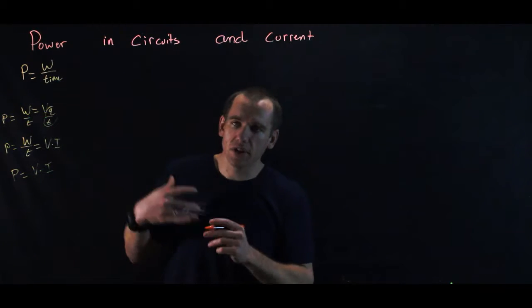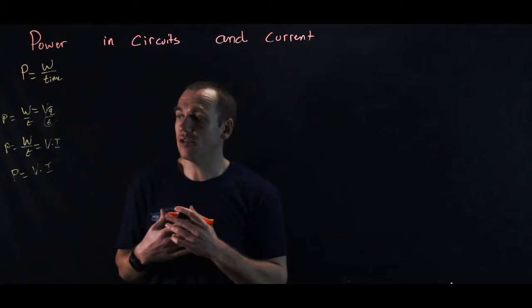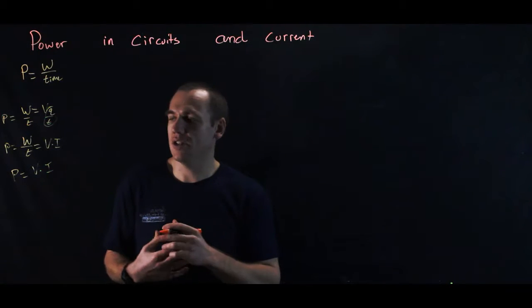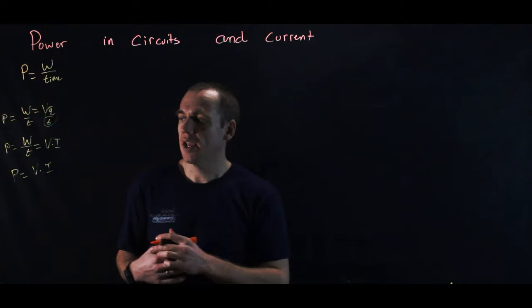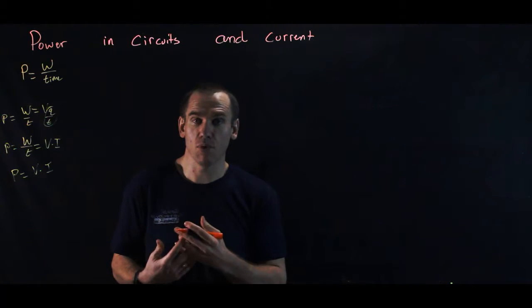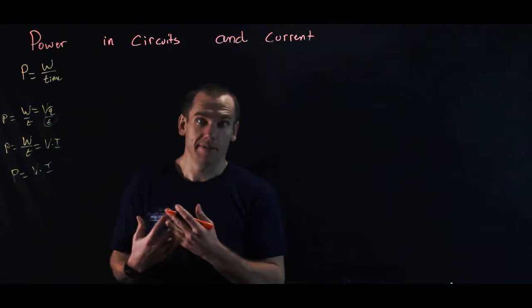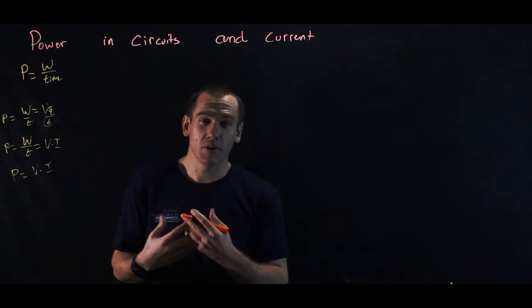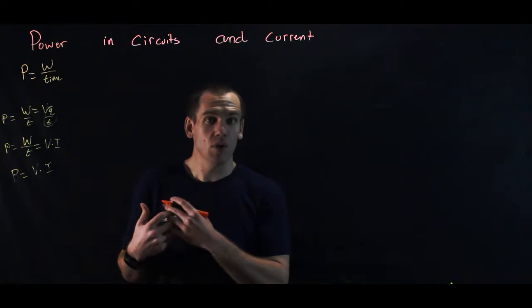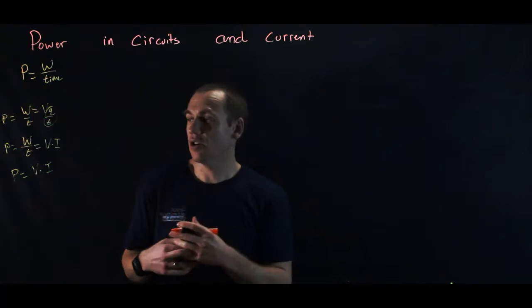Power is equal to voltage times current, so the rate at which electrical energy moves through a circuit, the rate at which electrical energy is used is voltage times current. Now that energy can be used in a number of different ways. We can run motors to make things move, we can run lights to generate light and heat, and even like a wire or a resistor, basically their function is to convert electrical energy into heat energy. That's how they resist current.